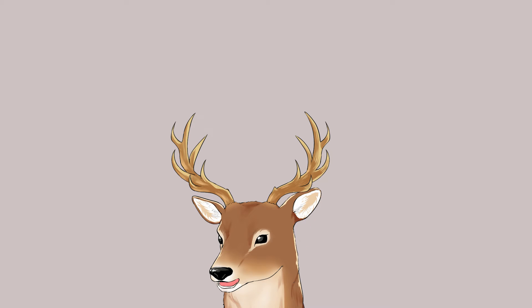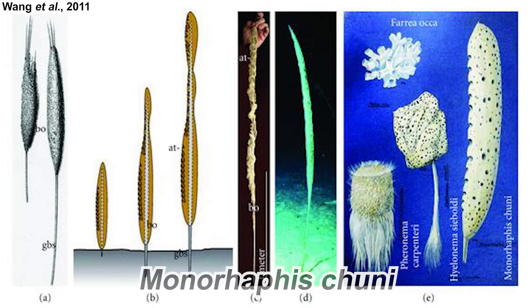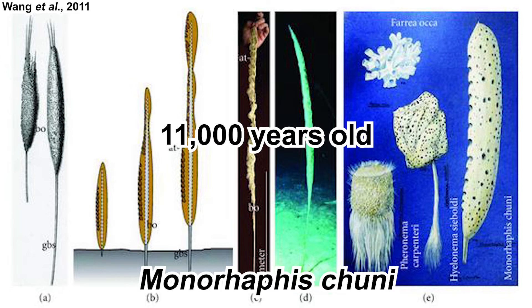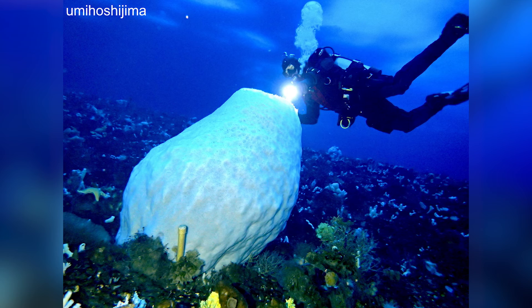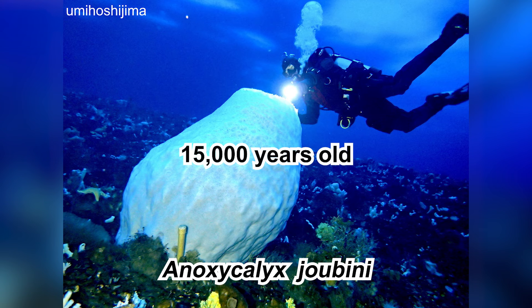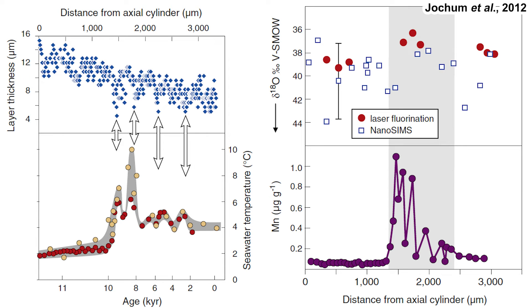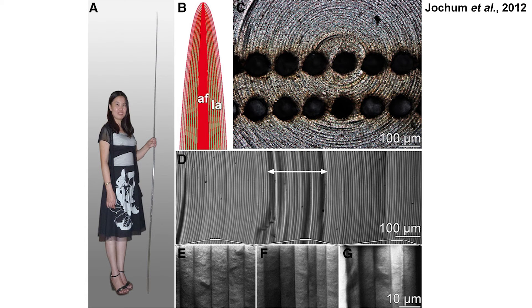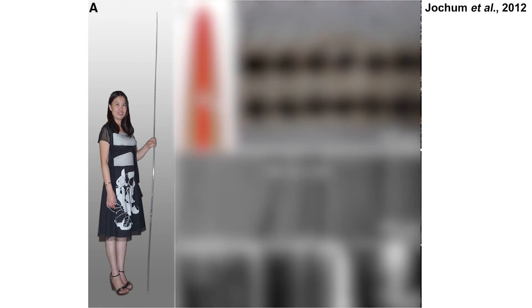Glass sponges can live a very long time — the record for the current oldest living animal is held by them. A deep-sea sponge Monorhaphis chuni is estimated to be around 11,000 years old. An age estimate for Scolymastra joubini is thought to be around 15,000 years old. Because of their age, their spicules can be used to determine climate changes over time — at least changes in ocean conditions where they live. These changes are analyzed by observing the lamellar organization and growth of their basal spicule, which is huge, as seen in this image.